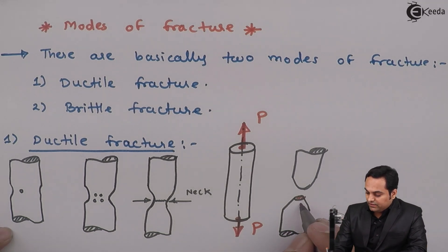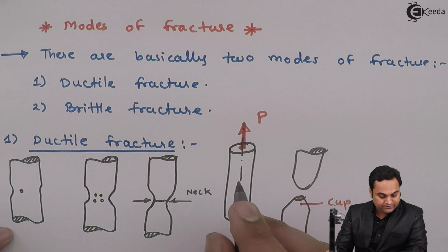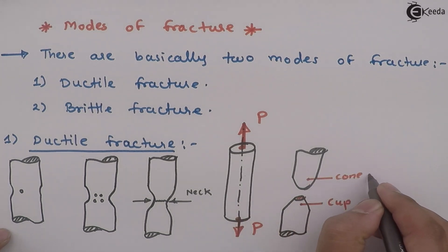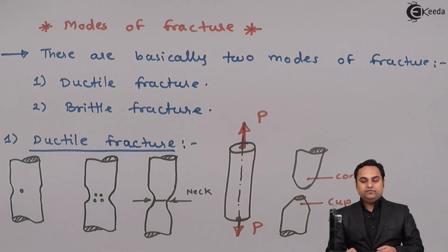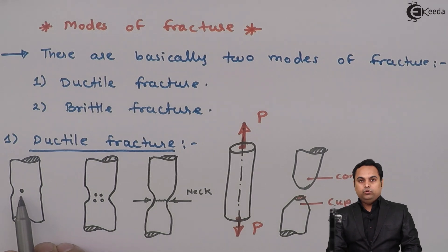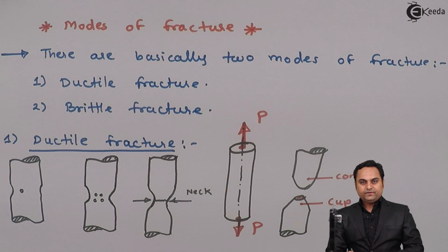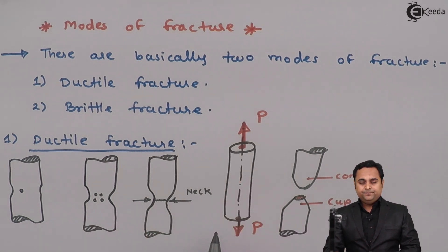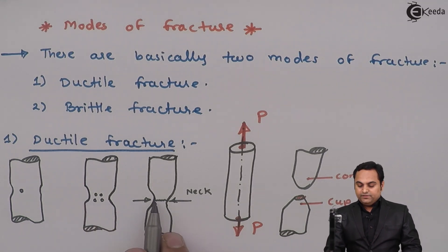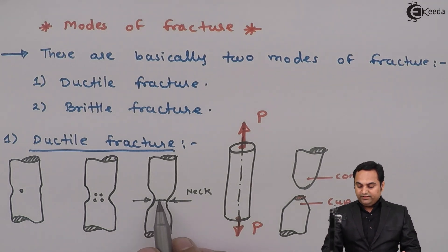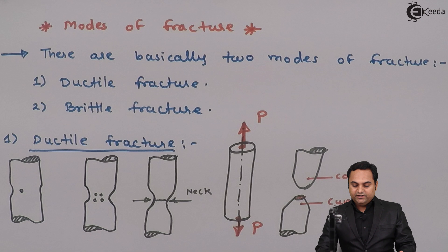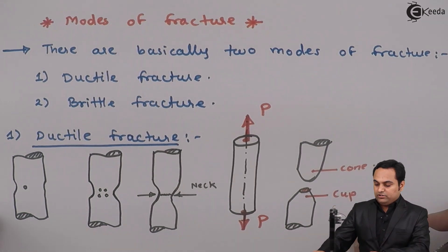The material breaks into a cup and cone arrangement. Once the load is applied, the length goes on increasing and the diameter goes on decreasing. Due to internal holes, the stress goes on increasing. When the load is increased further, the diameter decreases until a neck forms — a very small diameter — and then the material breaks into two halves with a cup and cone arrangement.